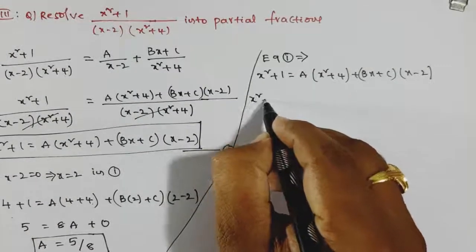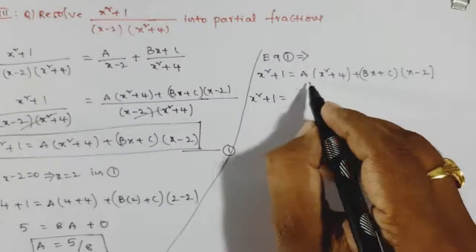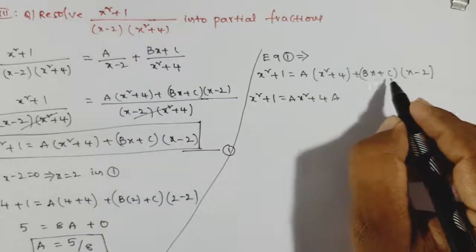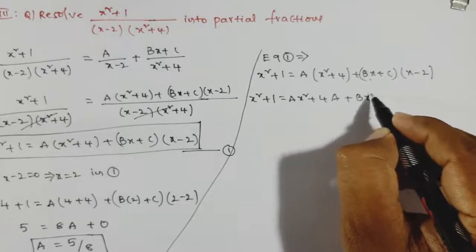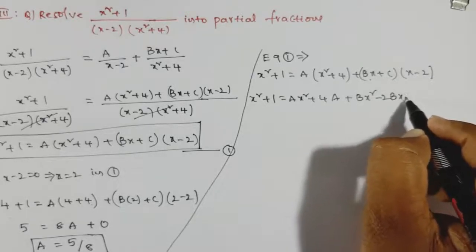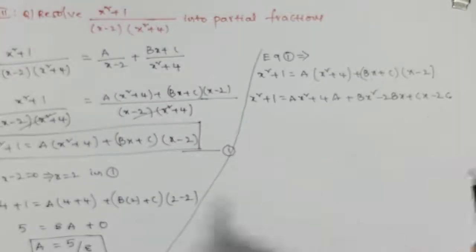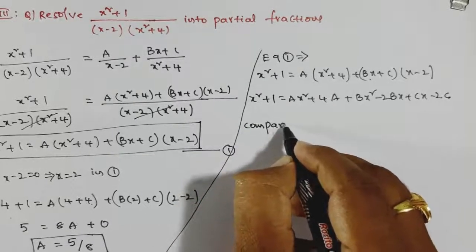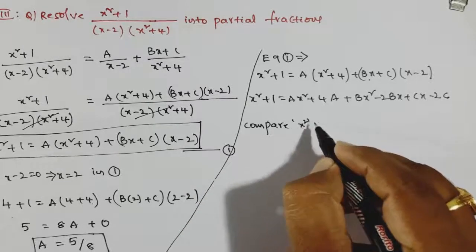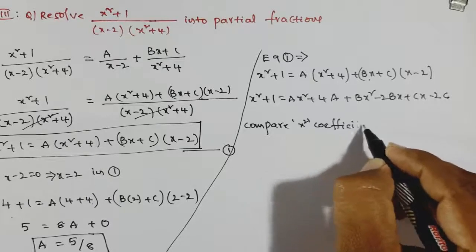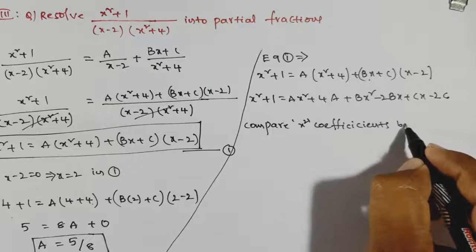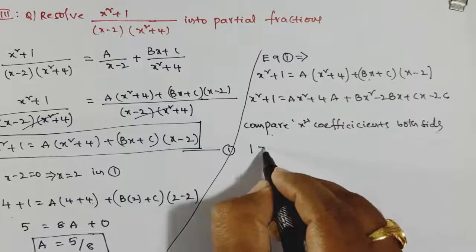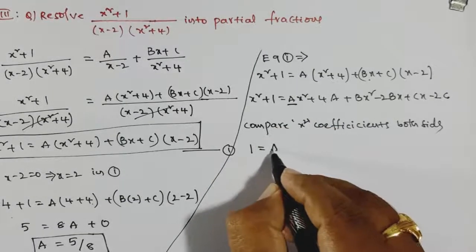Expand each term: (x² + 4) multiplied by A gives Ax² + 4A; and (x − 2) multiplied by (Bx + C) gives Bx² − 2Bx + Cx − 2C. Now comparing the x² coefficient on both sides: the left-hand side gives 1, and the right-hand side gives A + B.